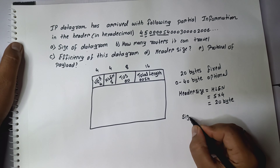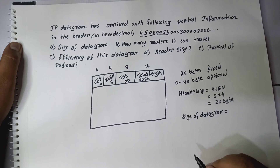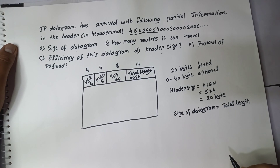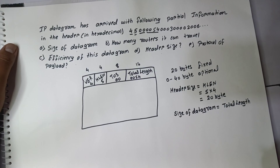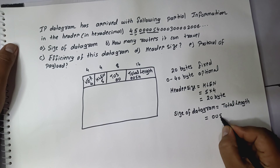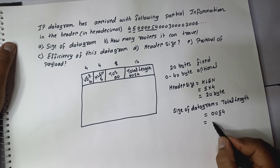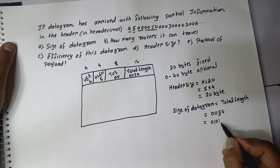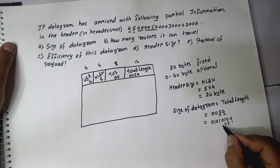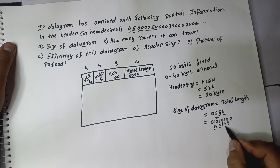The size of the datagram is obtained from the total length field, which contains both the header length and the payload length. The total length is given in hexadecimal as 0054. Converting to binary: 5 is 0101 and 4 is 0100. Converting to decimal: 64 + 16 = 80, plus 4 equals 84. So the datagram is 84 bytes.